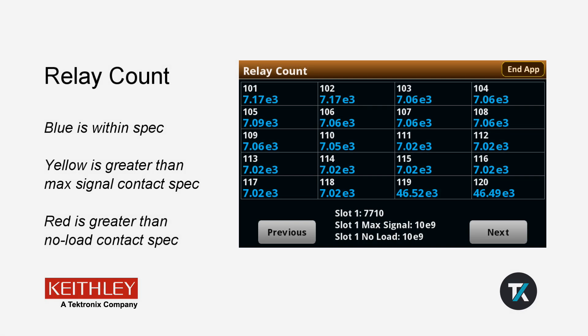The Relay Count app looks at what cards are inserted in the instrument. It then queries inserted cards for relay closure counts on each channel. The app compares these values to the card's Relay Closure Count specifications and outputs the closure count as a color-coded number.